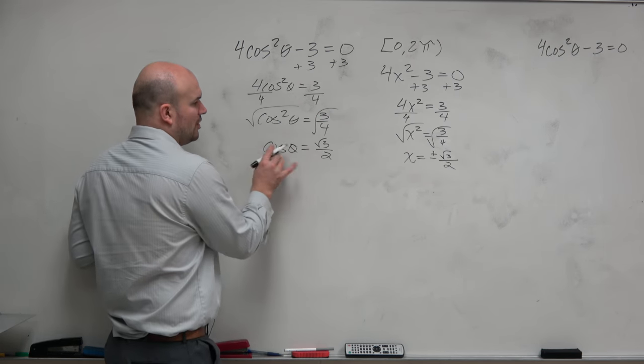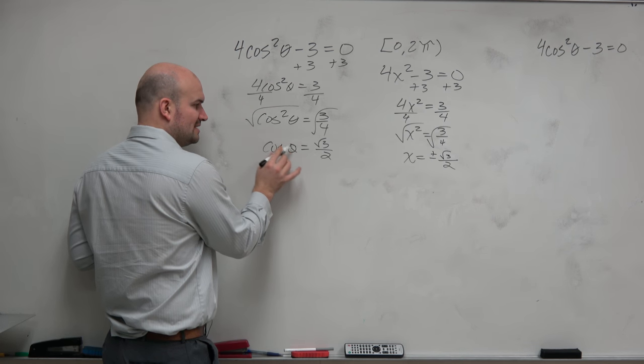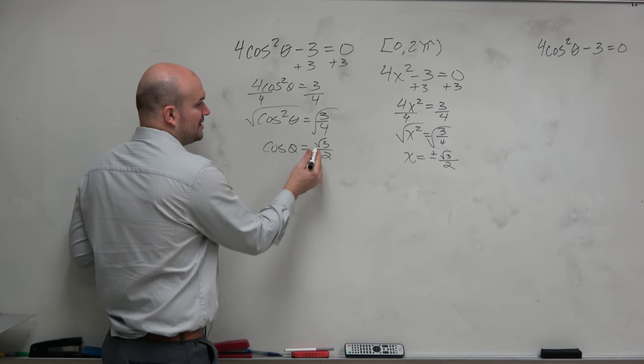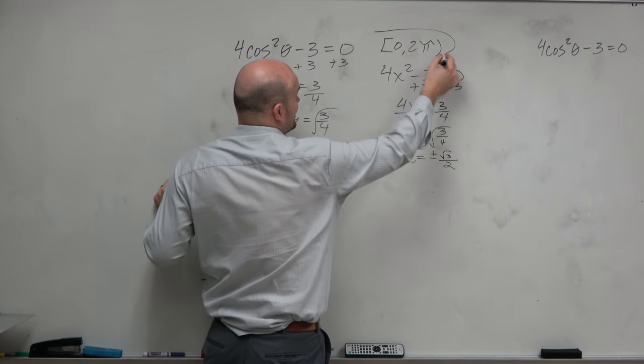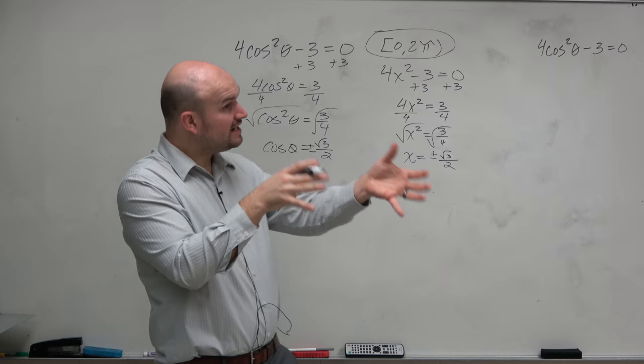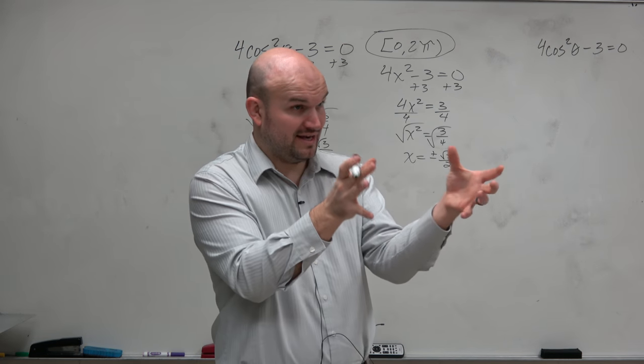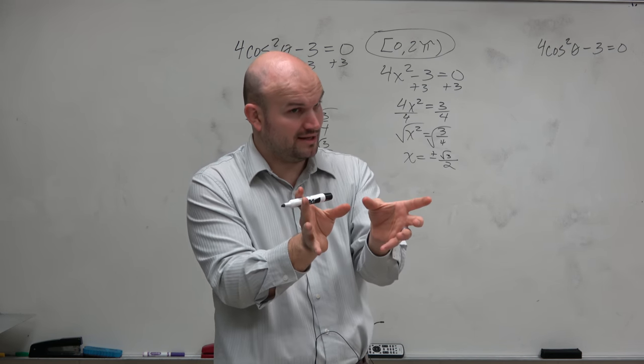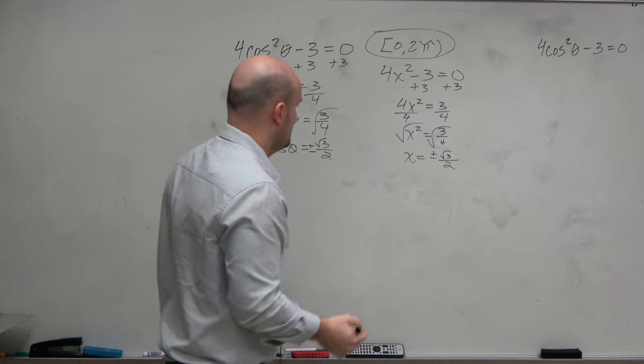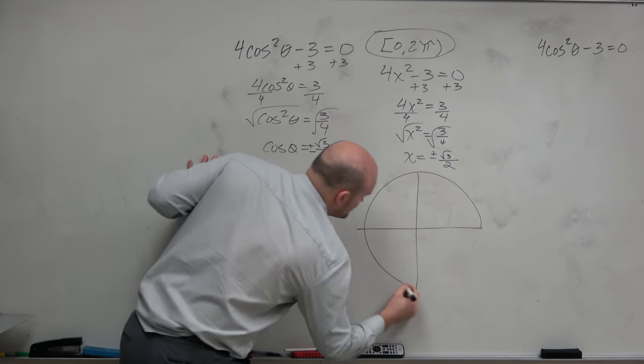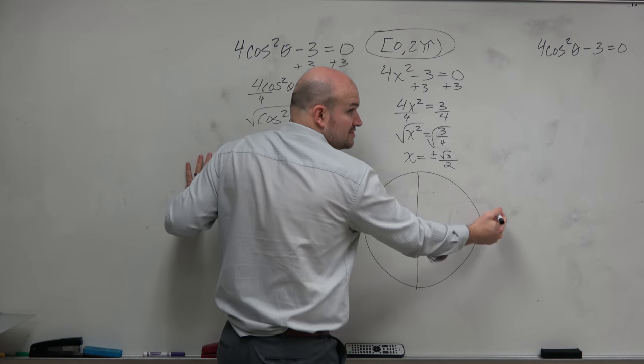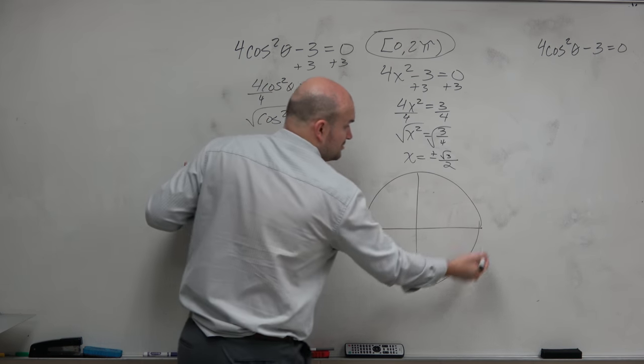So now what we're doing is we're looking for all the angles. When I take the cosine of that angle, I get plus or minus square root of 3 over 2, right? And then I have my constraint 0 to 2π. So we're not using inverse function where we're just finding that one angle that fits within the domain. We're finding all of the solutions. So we go to our unit circle. All the solutions between 0 and 2π, which is basically one revolution of the unit circle. Here's 0 to π, here's 0 to 2π.